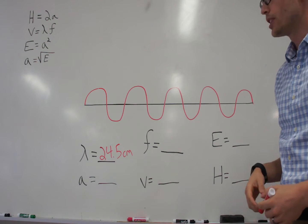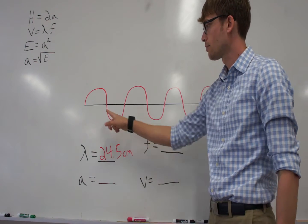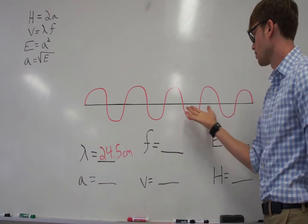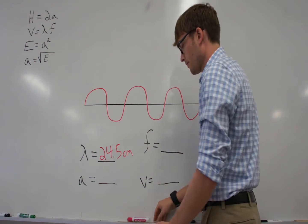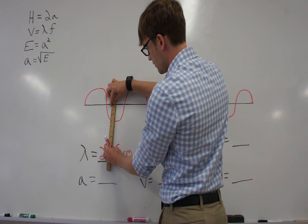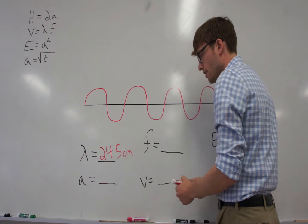Next, let's find amplitude. We know that amplitude is the distance between the rest and the crest, or the rest and the trough, and these should all be the same distance. So all you do is you take your ruler and you measure. That's 7.5 centimeters.